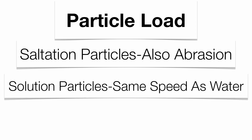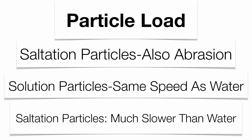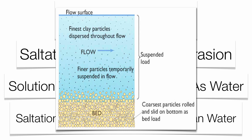Those solution particles, because they're so teeny tiny, are going to pretty much travel at the same speed as the water. Those saltation particles tend to travel much slower — a lot more friction. Here's a quick diagram that shows the different loads that the water can pick up. Your dissolved load you can't really see because it's part of the water column now, but you can see the suspension load and the saltation load at the bottom.